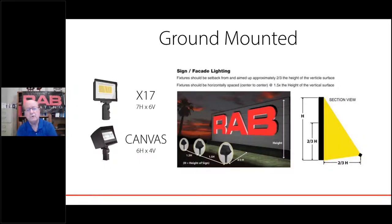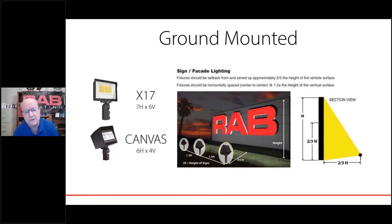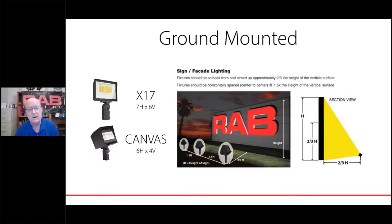Now let's look at some rules of thumb for ground mounting these floodlights. The spacing back from the sign or building facade is two-thirds of the height — so if the height is 30 feet, the spacing back is approximately 20 feet. And the spacing between luminaires is about 1.5 times the mounting height. This is for wide angle floods and is a really accurate rule of thumb.